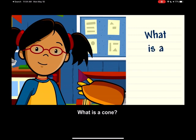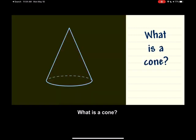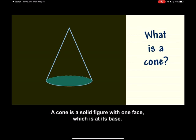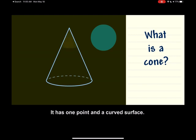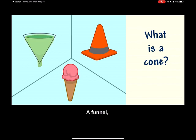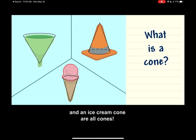What is a cone? A cone is a solid figure with one face, which is at its base. It's shaped like a circle. It has one point and a curved surface. A funnel, a traffic cone, and an ice cream cone are all cones.